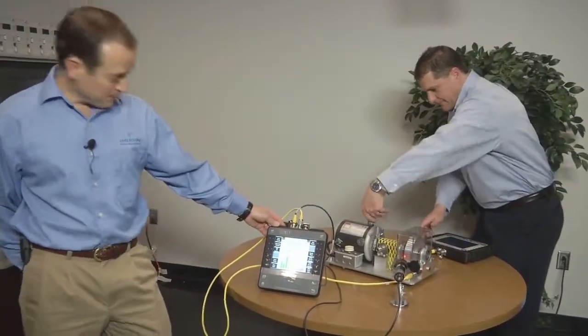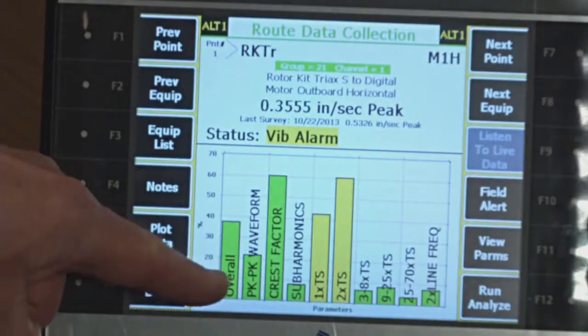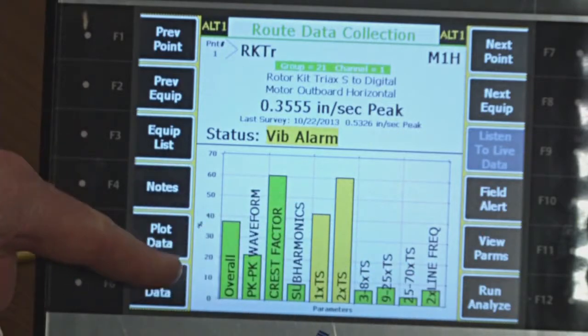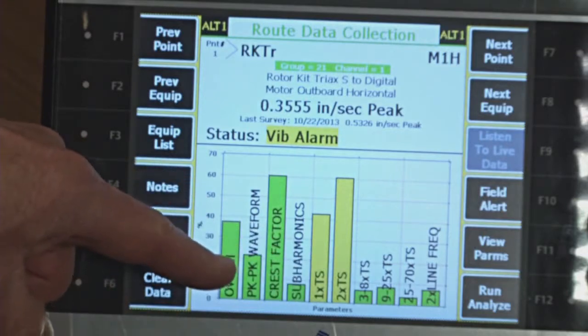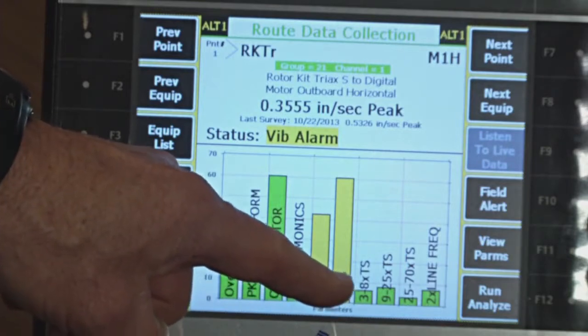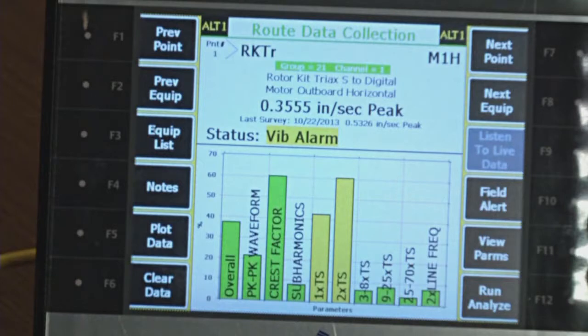Well, Drew's finishing that up. Let me show you a couple of things on the 2140. What is displayed are all the parameters. These are the analysis parameters for each point. And you can see right here that I've got everything is green except for two parameters that are in yellow alarm. So that is an early level, early alarm condition.